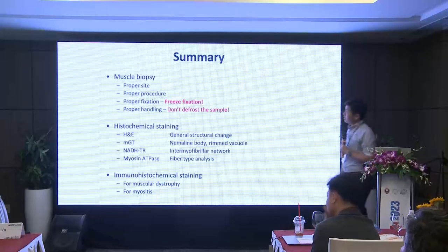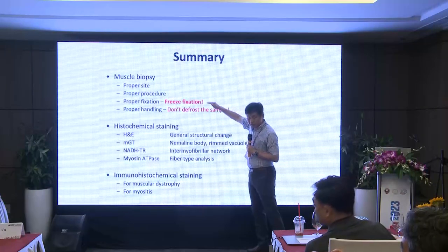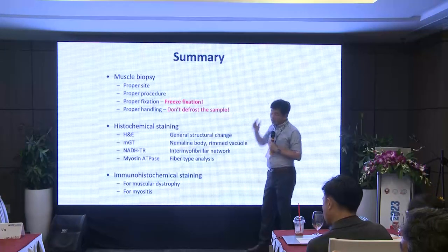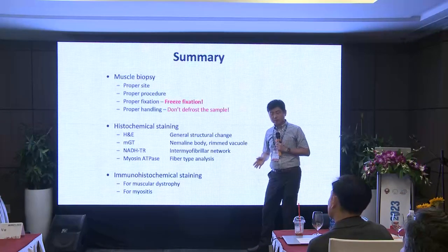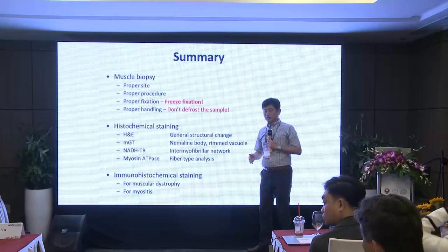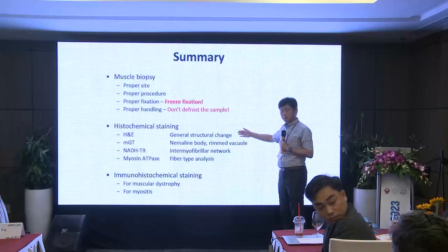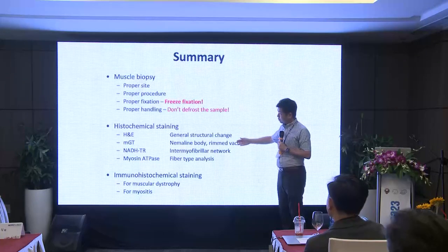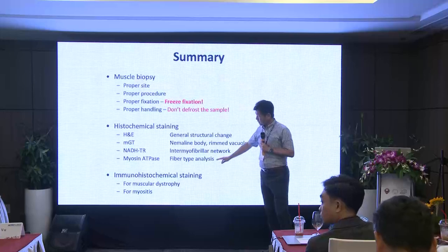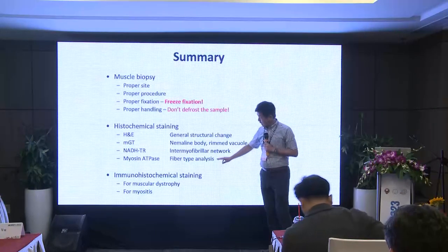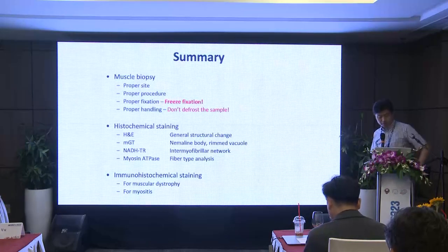In summary: muscle biopsy requires freeze fixation, and once frozen the sample should never be defrosted — keep it at minus 80 degrees. If you don't follow the correct method, you will always get artifacts. H&E is the most important stain, along with modified Gomori trichrome and NADH. Myosin ATPase is used to analyze fiber type, along with immunohistochemical stains. Thank you very much for your attention.